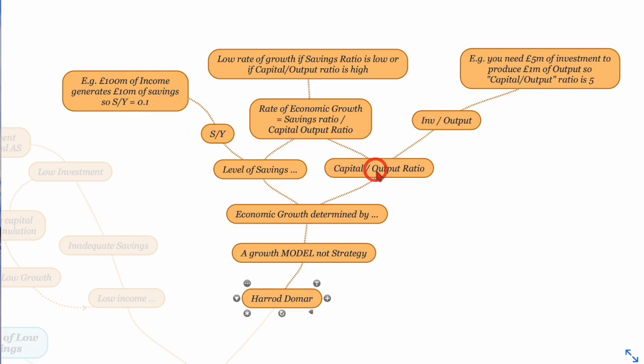And the next thing to look at is what they call the capital to output ratio. And it's the amount of investment or capital that you need, let's say 5 million pounds worth of machinery, to produce a million pounds worth of output. So the ratio would be 5. We need 5 units of capital for every 1 unit of output.